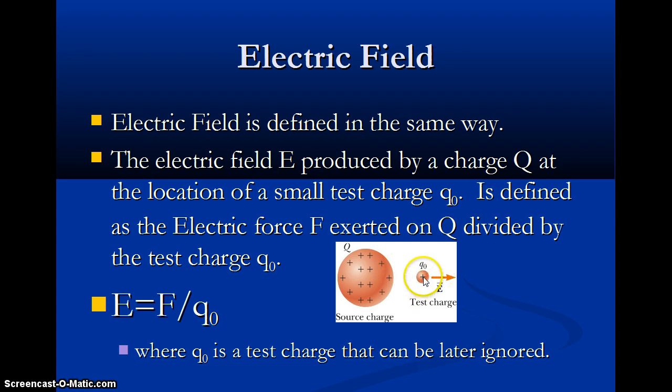Any charge that we put at this point will measure the same electric field. There'll be different forces because the force depends on the charge k, q1, q2 over r squared. R is just the distance from here to here. It doesn't really matter what it's going to be. This test charge cancels out. So the electric field depends on the force and the charge.